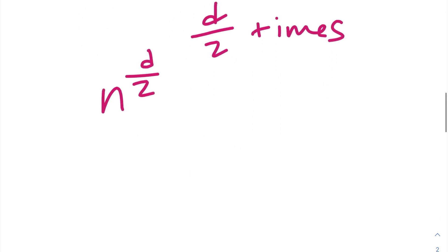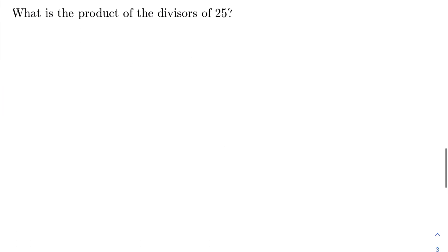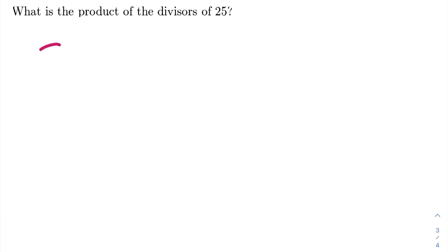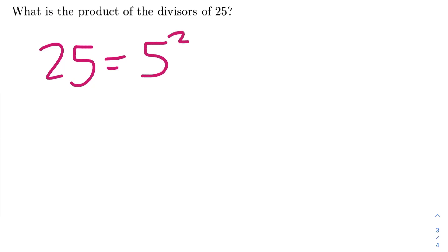Now let's do the last problem: what is the product of the divisors of 25? First, we need to find how many divisors the number has. We can do that using prime factorization. The prime factorization of 25 is 5 to the power of 2, so this number has 2 plus 1 factors, which is equal to 3.